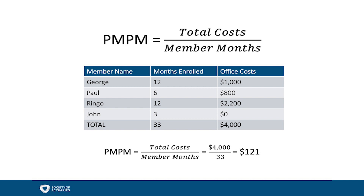Each member accumulates one member month for each month they're enrolled in a plan. So in any given year, every enrolled member will contribute between 1 and 12 member months. The average number of enrollees over any period can be calculated simply by dividing the number of member months by the number of months in that period.